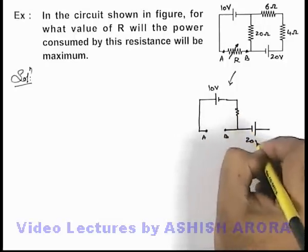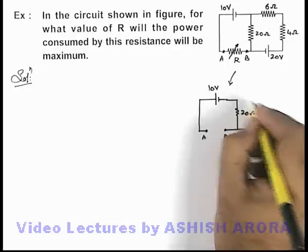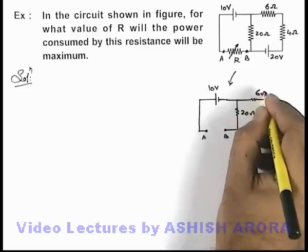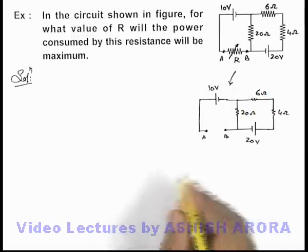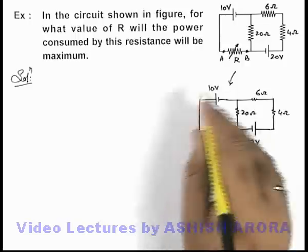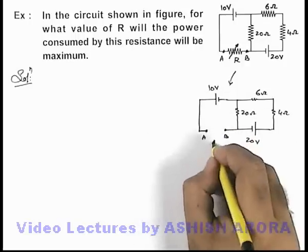This is the 20 volt battery, this is 20 ohm resistance. Here 4 ohm and 6 ohm resistances are connected. Then in this situation if we just wish to find out the equivalent EMF and equivalent internal resistance of the circuit.